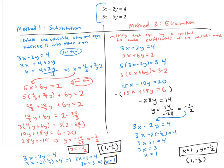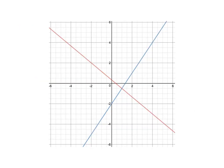Before we go on to the next problem, let me show you graphically what this means. Here I've graphed the equations three x minus two y equals four and five x plus six y equals two. We can see that these two lines intersect at the point with coordinates (1, -1/2), just like we predicted by solving the equations algebraically.